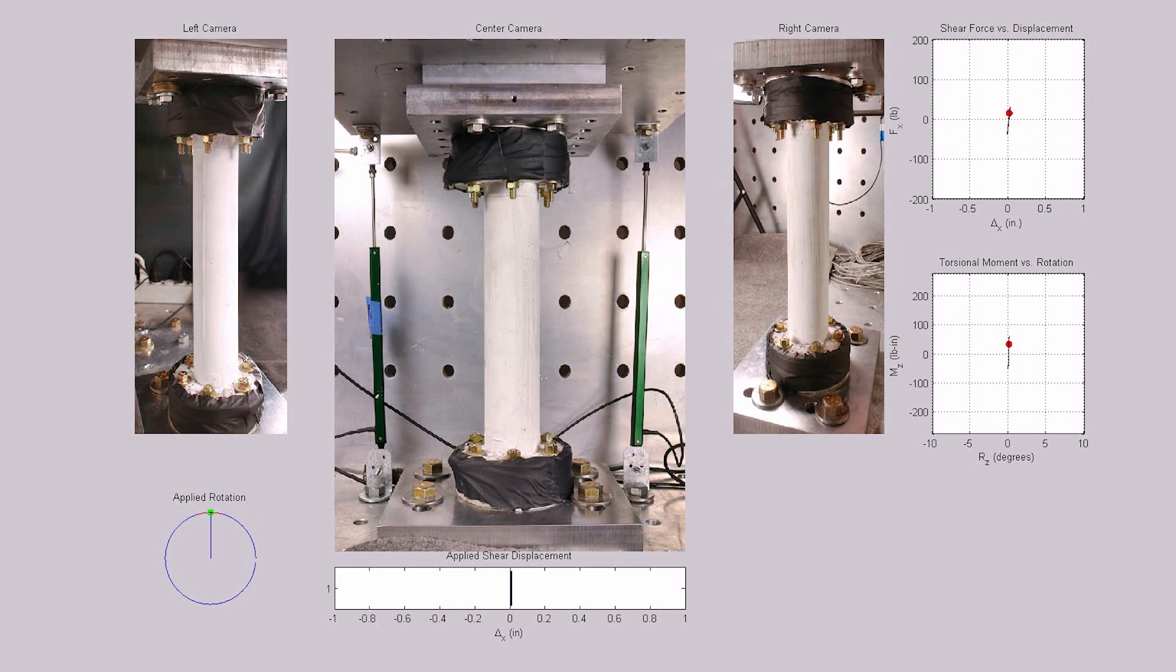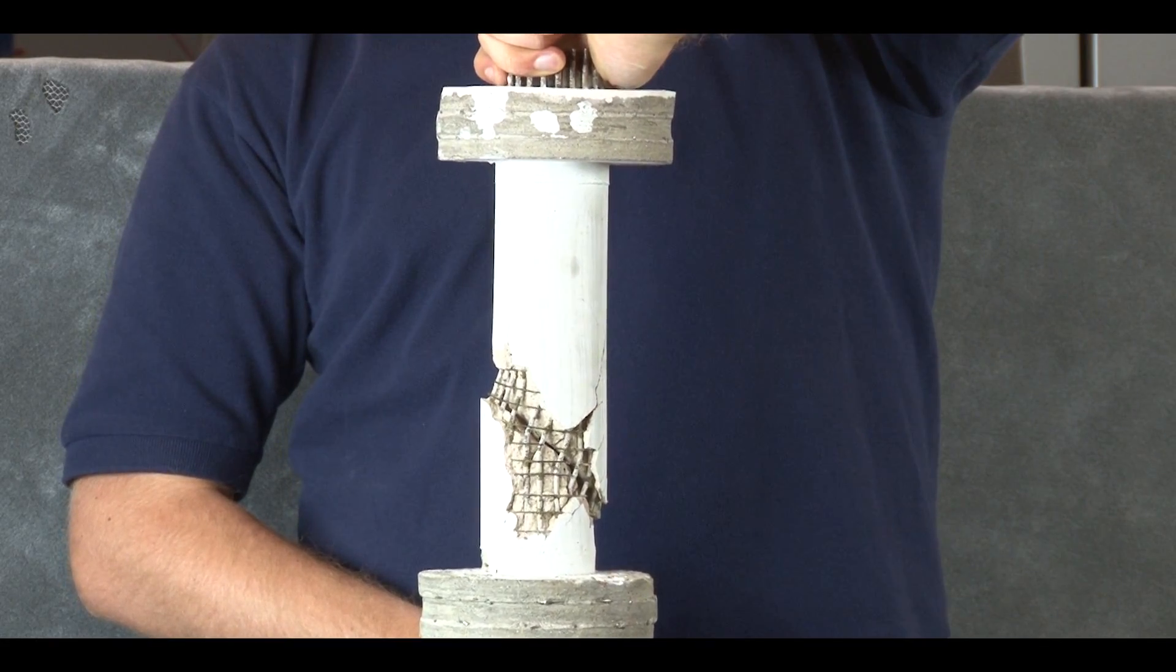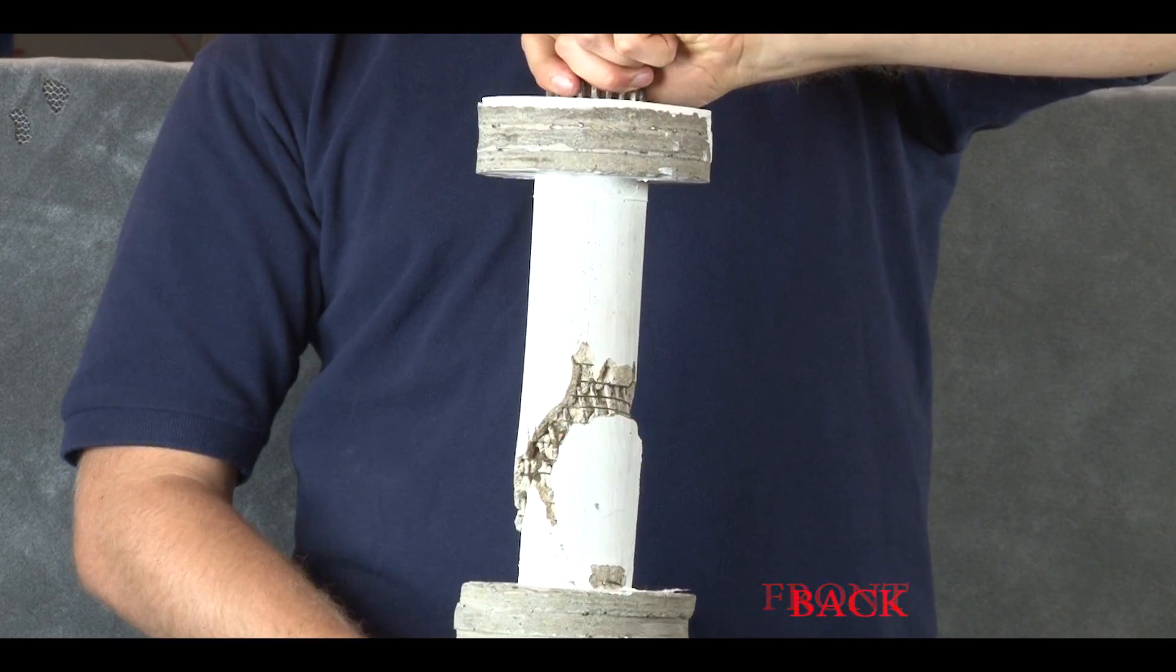It should be noted that for the one-to-one case of combining lateral displacements and rotations, the ultimate cracking pattern shows shear cracks in the same direction on both the front and back of the specimen.